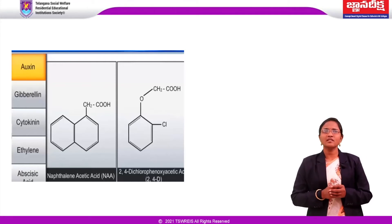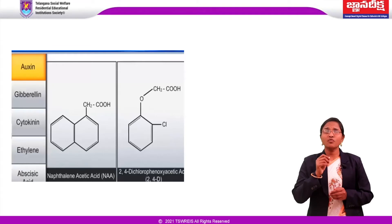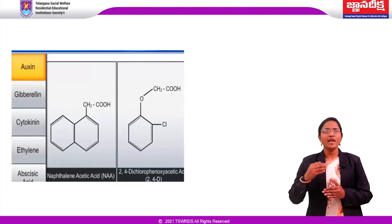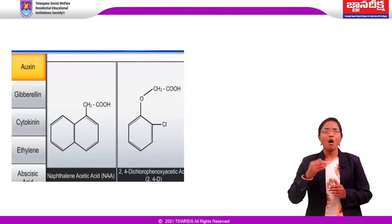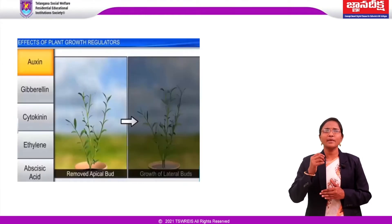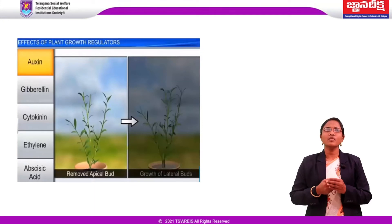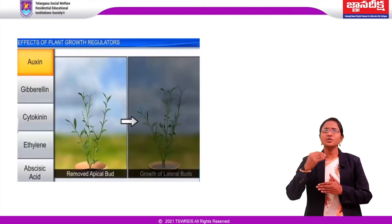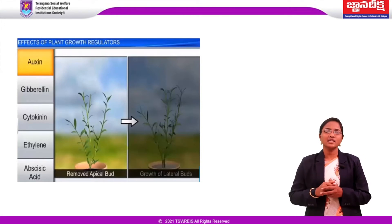Examples of synthetic auxins are naphthalene acetic acid and 2,4-dichlorophenoxyacetic acid. Auxins are responsible for apical dominance: when shoot tips are removed, it usually results in the growth of lateral buds. Due to this phenomenon, this is widely applied in tea plantation and hedge making.